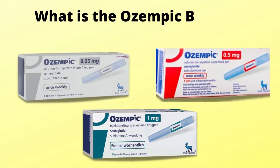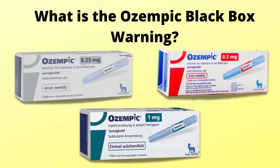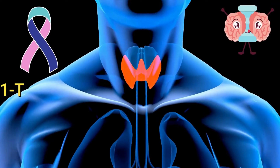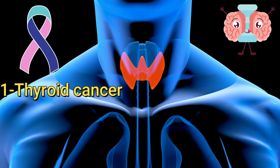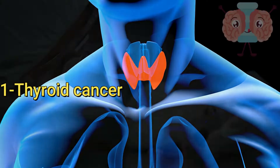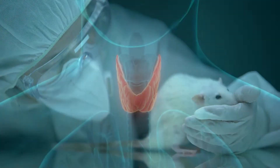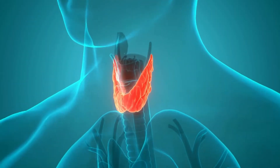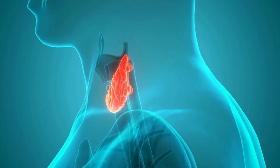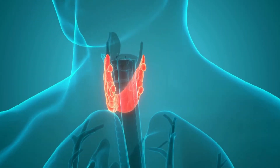What is the Ozempic black box warning? Ozempic has a black box warning for the risk of thyroid cancer. Ozempic has caused thyroid cancer in animals. It is unclear whether the drug also increases the risk of thyroid cancer in humans.